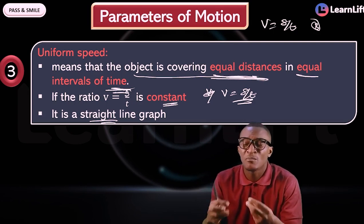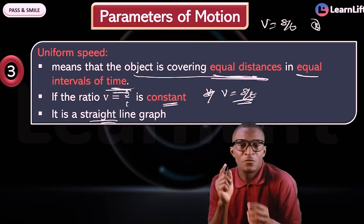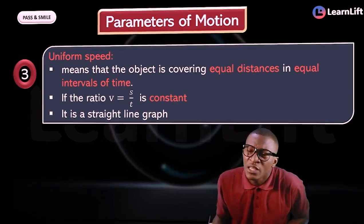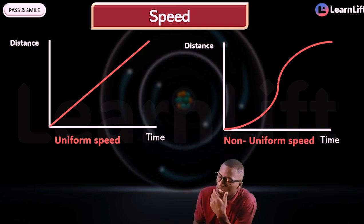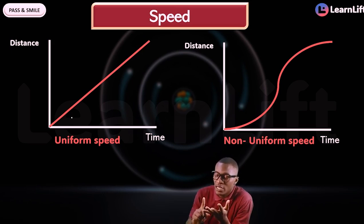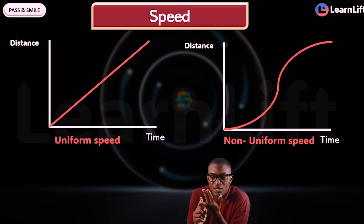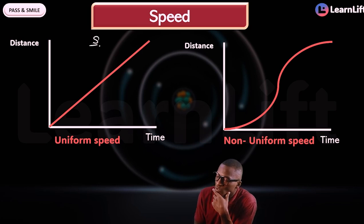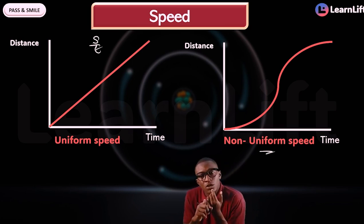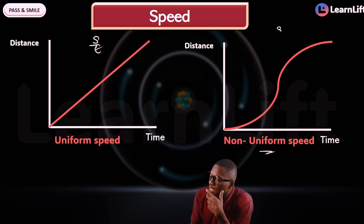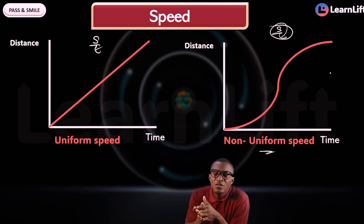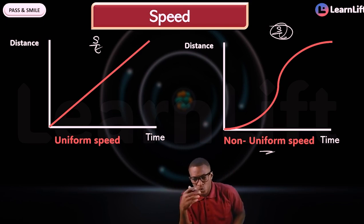These properties are past questions — memorize them! Non-uniform speed is the opposite: unequal distance is covered in equal time, the distance-to-time ratio is not constant, and it does not produce a straight line graph.